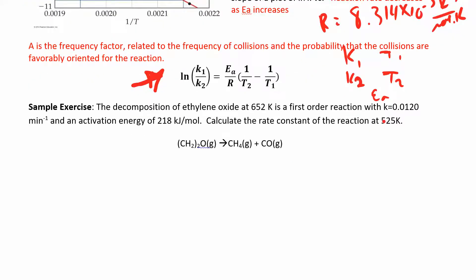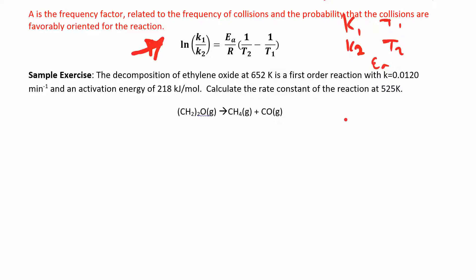Let's try it. Let's use this equation on this problem. This was just a homework problem I added into the notes. The decomposition of ethylene oxide at this temperature is first order. They give us a K. Let's say K1 is 0.0120, and that's in minutes to the negative one. And the temperature that goes with that is 652 Kelvin. We don't know what the K2 is. That's what we're going to find. Calculate the rate constant when the temperature is 525 Kelvin.